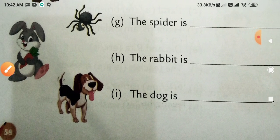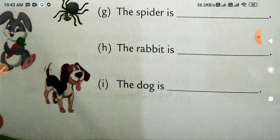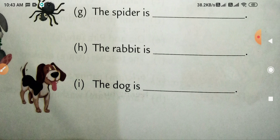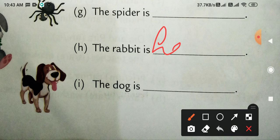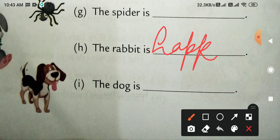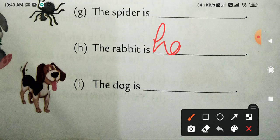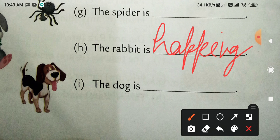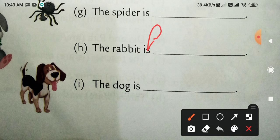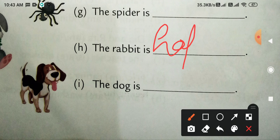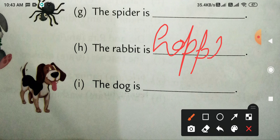Next, the rabbit. Rabbit ko dekho kya kar raha hai. Hop. Hop means pairon par kudna. That means hopping kar raha hai, the rabbit is hopping. H-O-double P-I-N-G, hopping.